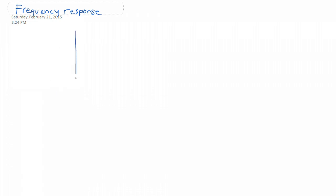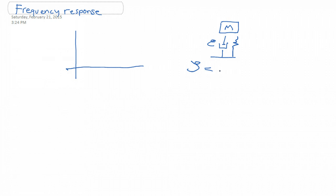Today we're going to continue with describing the frequency response. We're going to describe the two ways we can represent losses. We had this mass-spring-damper system, and the damper is what mainly concerns us with losses. There's a zeta parameter, which is a function of different things — it's proportional to the c factor, and also inversely proportional to the spring constant k and mass m. The c factor is the damping coefficient for the damper.